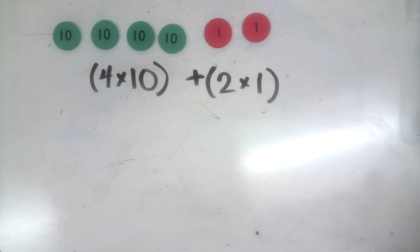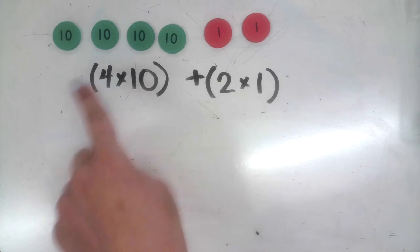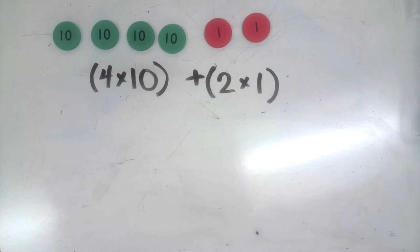So at this point we have 4 times 10 plus 2 times 1. Altogether we have a total of 42. Four tens, two ones, 42. Those are some steps that we already are aware of.